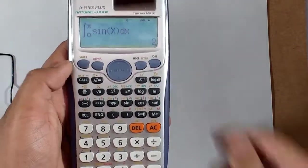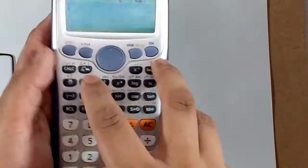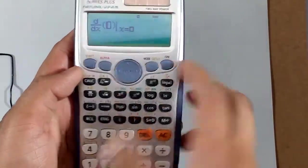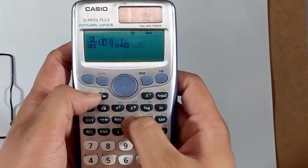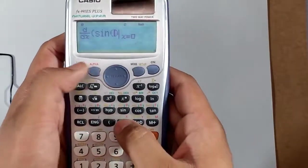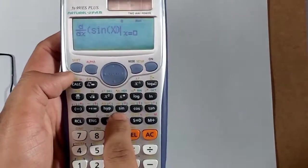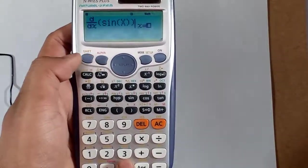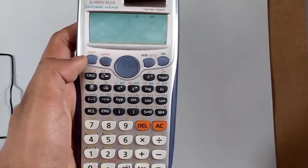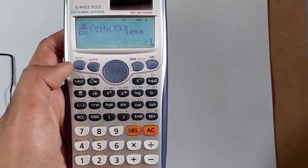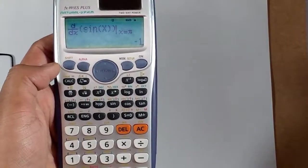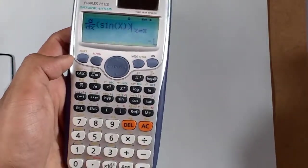Let's look at the d/dx function. Shift, sine, we're going to input a variable x, bracket close, and x equals shift pi. Here it is. Differentiation of sin x is equal to minus cos x, and cos pi equals one, so minus one.